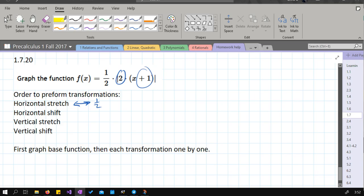Horizontal shift is the plus one. So plus one actually moves in the negative direction or to the left one.